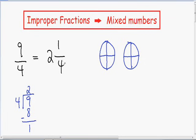Since we also have a fraction of 1 fourth, I'm going to draw an extra 1 fourth piece of the pie. Let's count how many fourths of the pies we have total. We have 1 fourth, 2, 3, 4, 5, 6, 7, 8, 9.